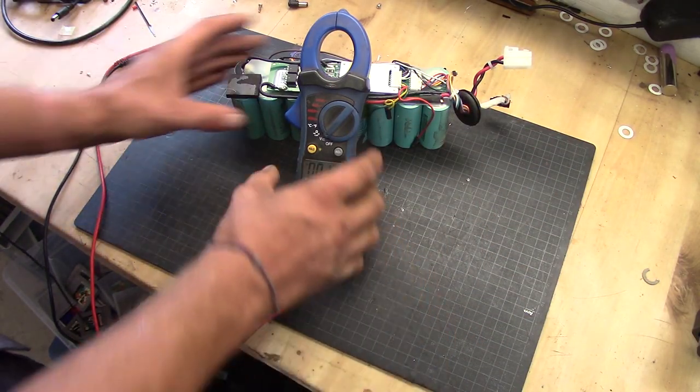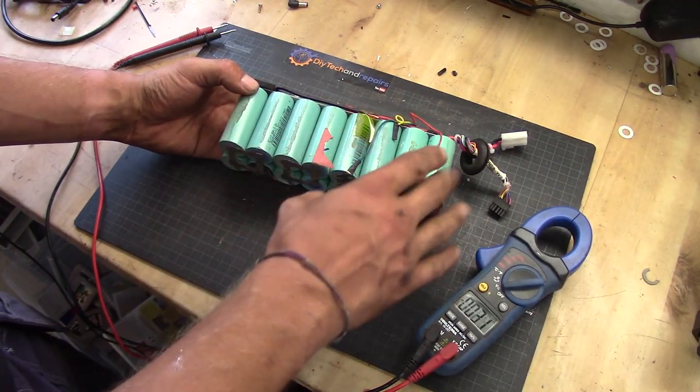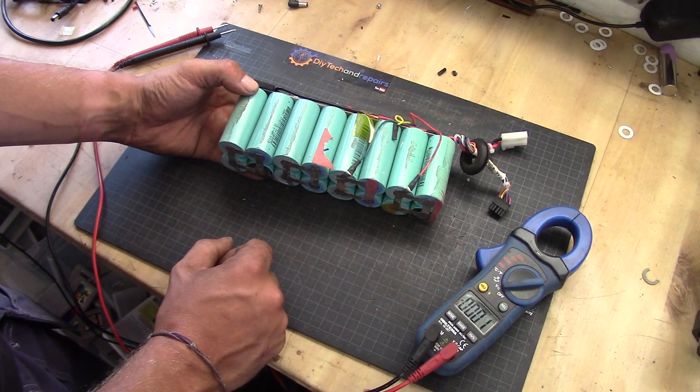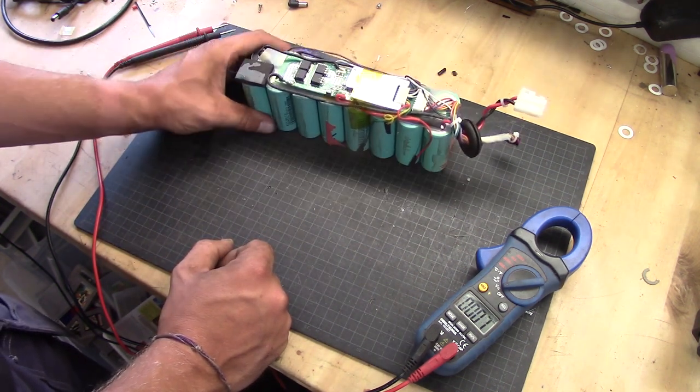That's not the case. So basically this is 1, 2, 3, 4, 5, 6, 7, 8 cell of the lithium iron phosphate. And that equals to a 24 volt system.